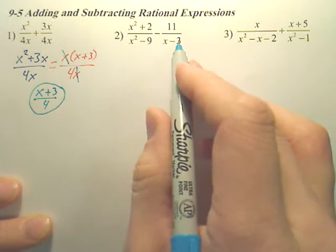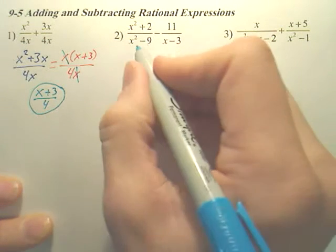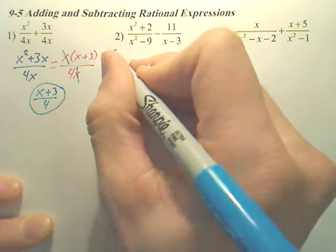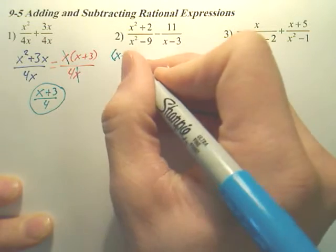These two, are they the same bottom? No. So let's factor this bottom. When you factor this, hopefully you notice it's called a difference of squares. When you factor it, you get something like this.